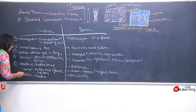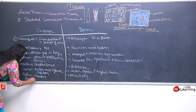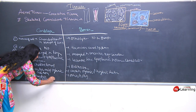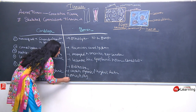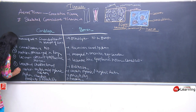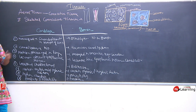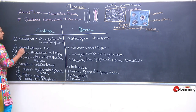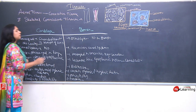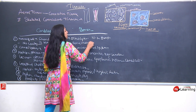Cartilage provides elasticity and flexibility, whereas bones provide hardness. Also, cartilages contain no cavity, whereas bones have a bone marrow cavity which contains bone marrow.